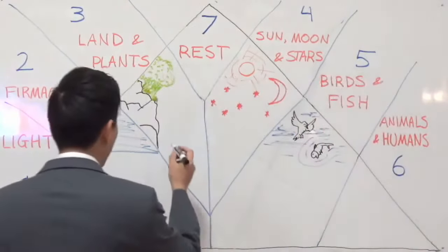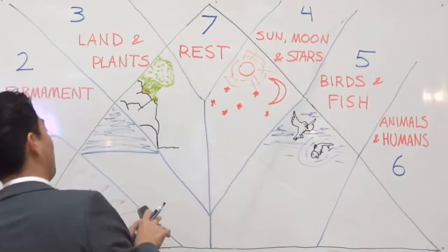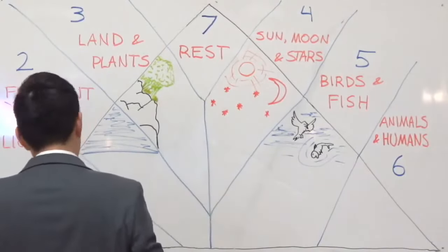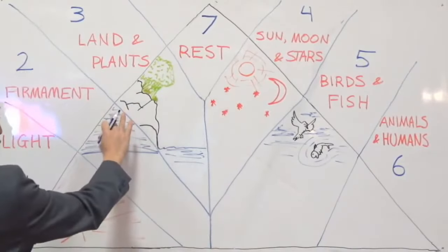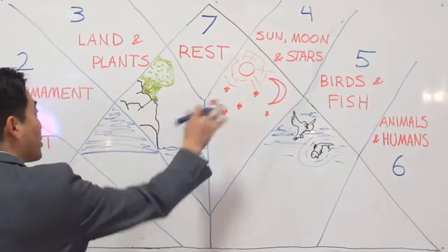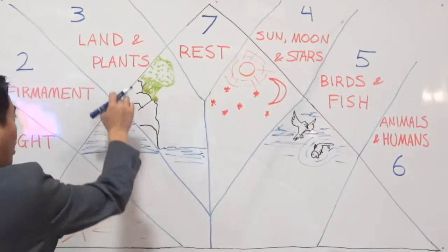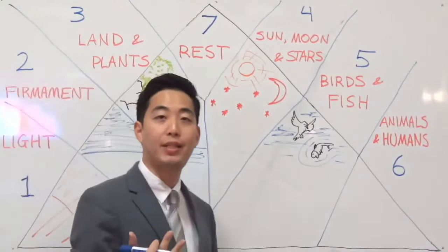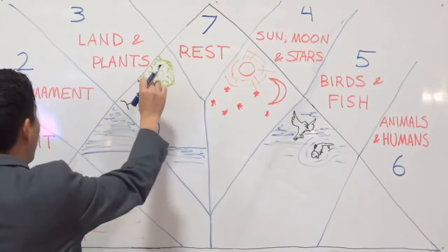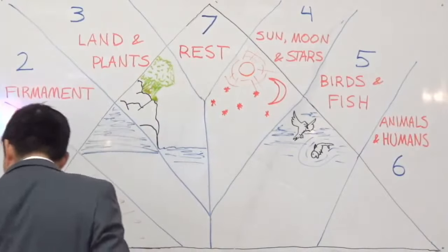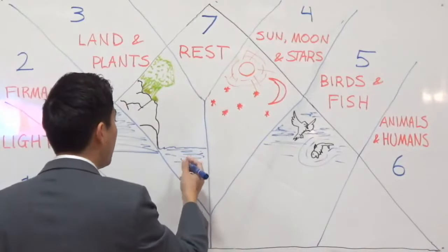On day number 3, God says let the waters under the heavens — now remember, they were under the firmament. The firmament is what divided the waters under and the waters above. Basically, the firmament is in the center. The water underneath is what we discovered from our last Genesis study to be seas, and the waters above we recall is also sea — but God puts a glass there. That's why it's called firmament, because there's something rock solid there.